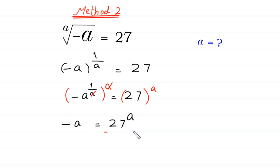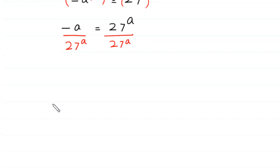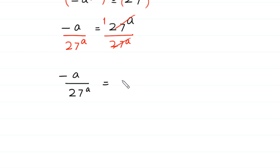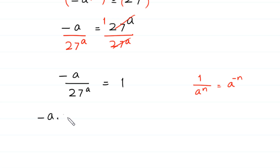From here, we divide both sides of this equation by 27 to the power a. This gives negative a over 27 to the power a equals 1. Using the property 1 over a to the power n equals a to the power negative n, we can write negative a over 27 to the power a as negative a times 27 to the power negative a equals 1.